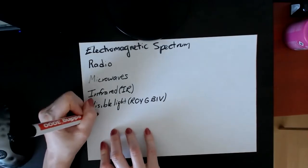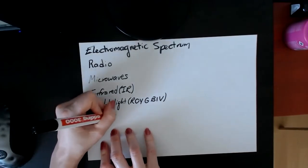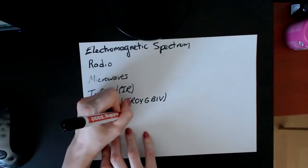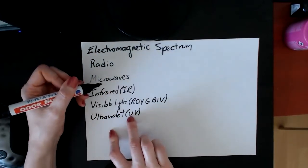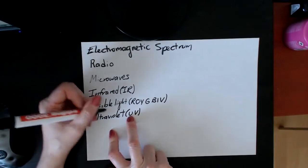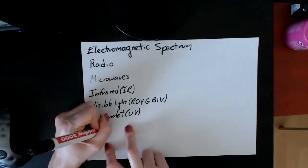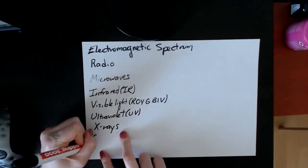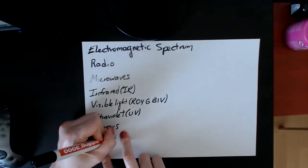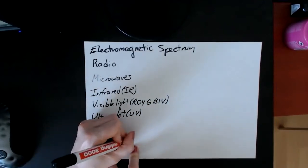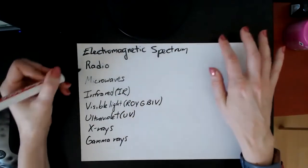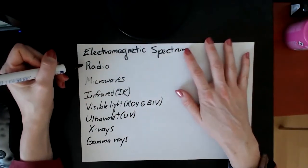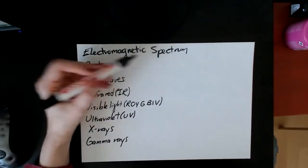Then you have ultraviolet, which is sometimes abbreviated UV, and again, that's a standard abbreviation. You can use that on the test. Then you have X-rays, and finally, you have gamma rays. The reason that I've written them in this order is because they are a spectrum.